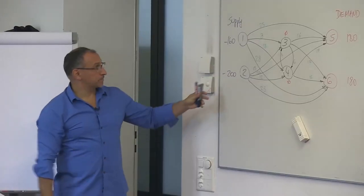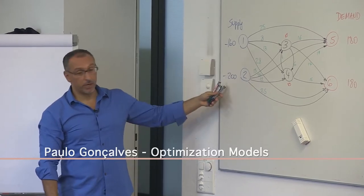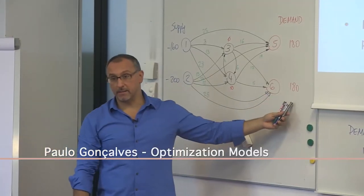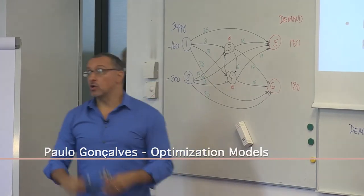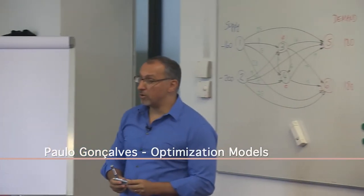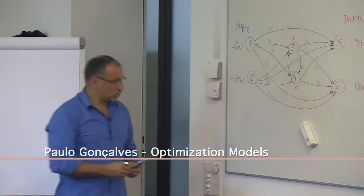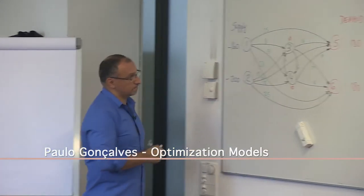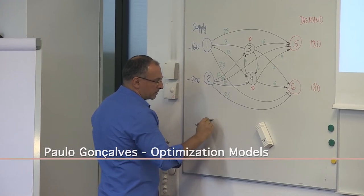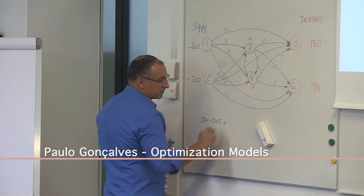Now we have total supply 360 equal to total demand 360. So we know that the balance of flow in this system — the inflow minus the outflow — is equal to supply or demand.